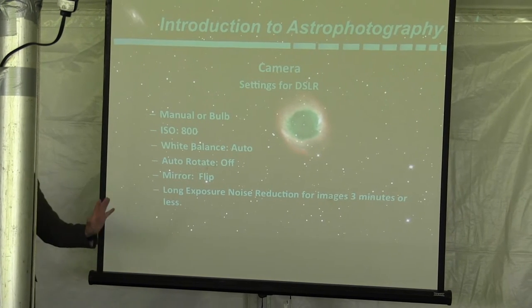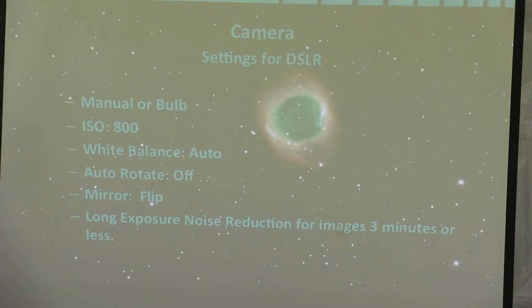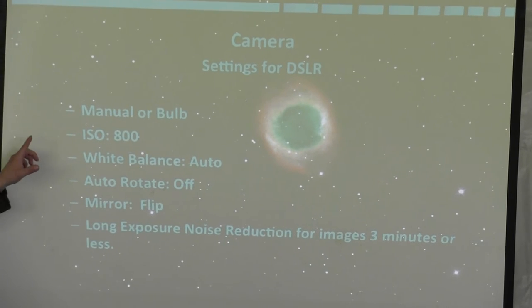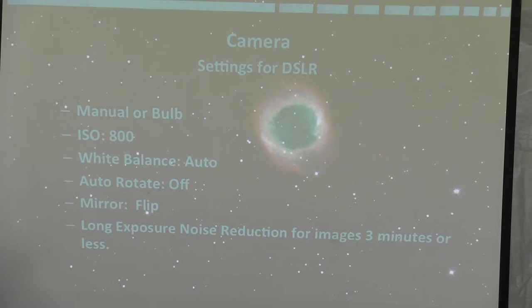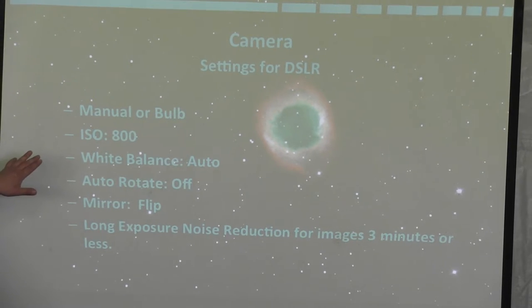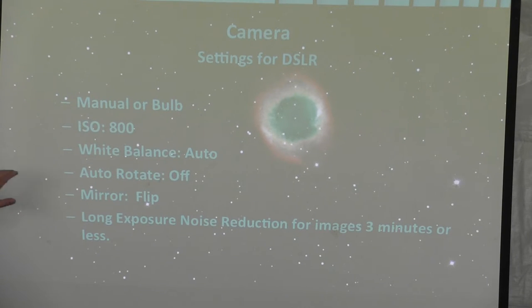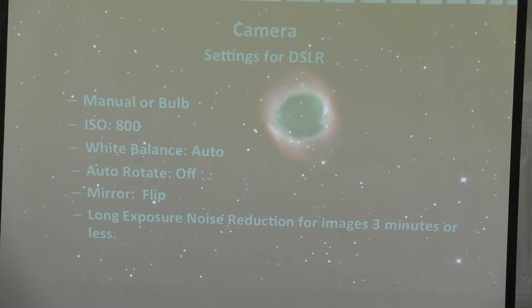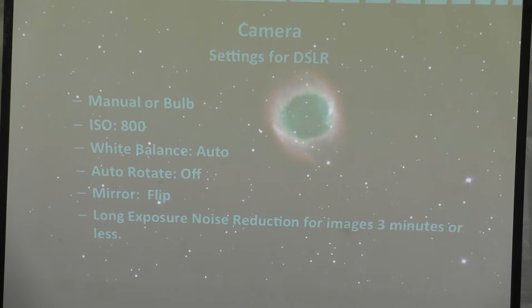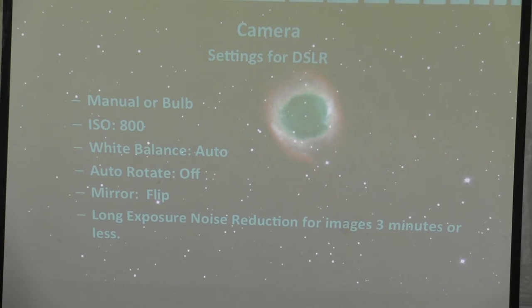Basic settings for DSLR. The settings you want is to go in your camera, and you want to set it for manual or bulb. Bulb is going to be used if you have one of those remote switches. Start at an ISO of 800. That should be almost universal. White balance to auto, rotate off, mirror flip. In a DSLR, you have a mirror that you're looking through the eyepiece. Whenever you take a picture with it, it puts the mirror up, takes a picture, and slams it back down, and that can cause vibration in the camera.